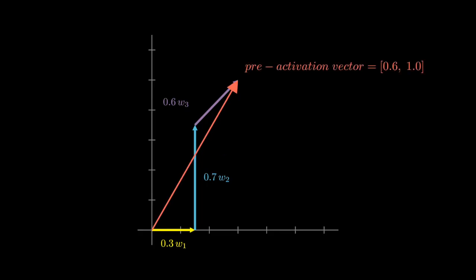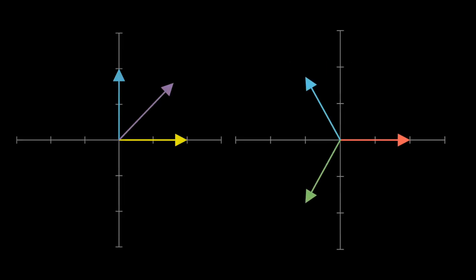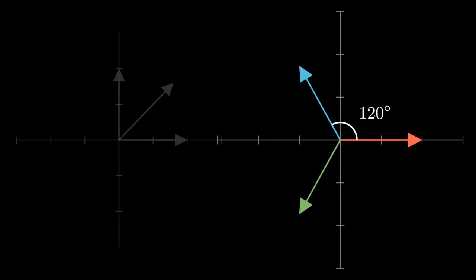In reality, features aren't always exactly columns of the weight matrix, and they can span multiple neurons and layers. Here is just a simplification to make the underlying geometry visible. Now you may be wondering why aren't these three feature vectors equally spaced at 120 degrees in the 2D space.